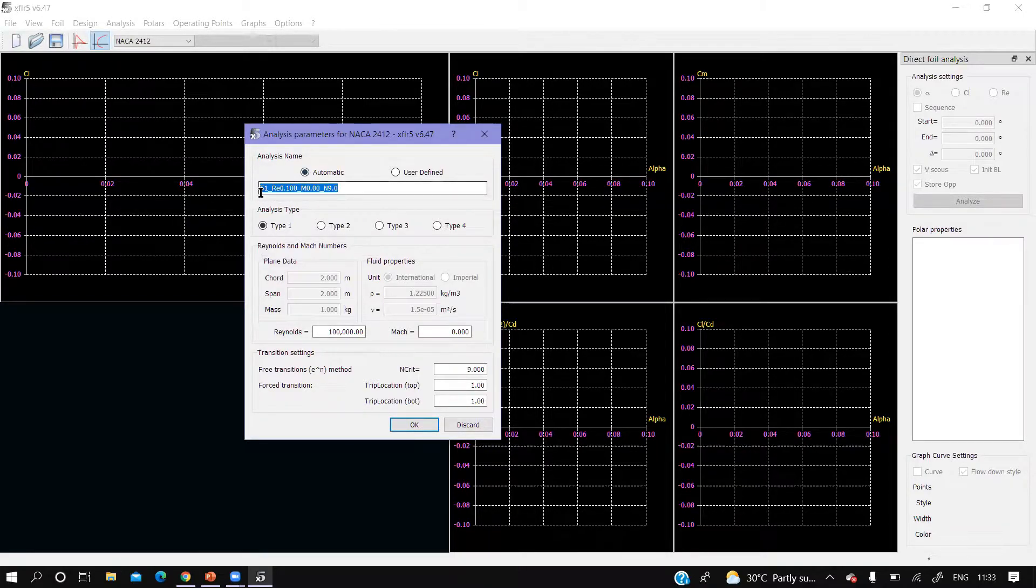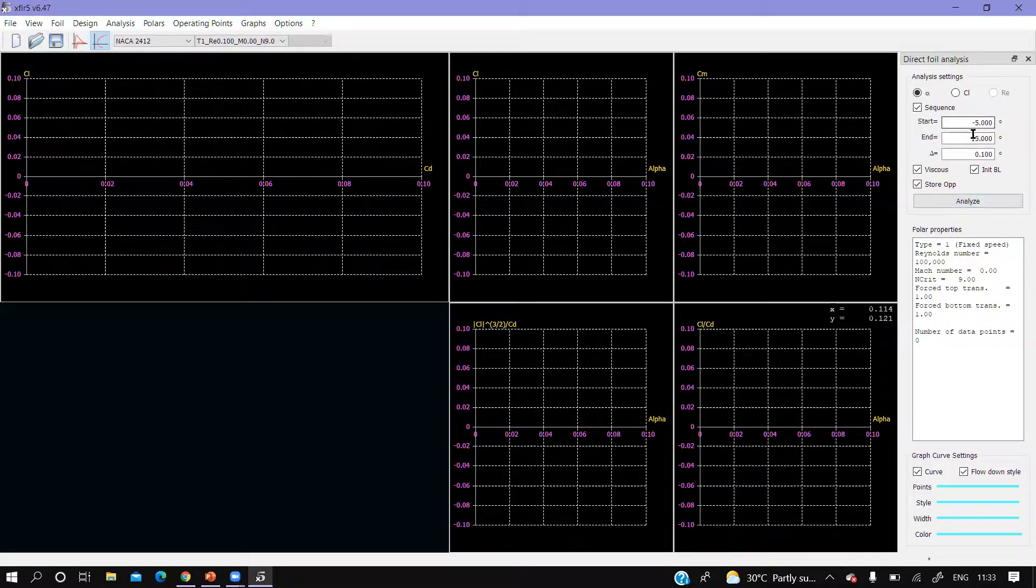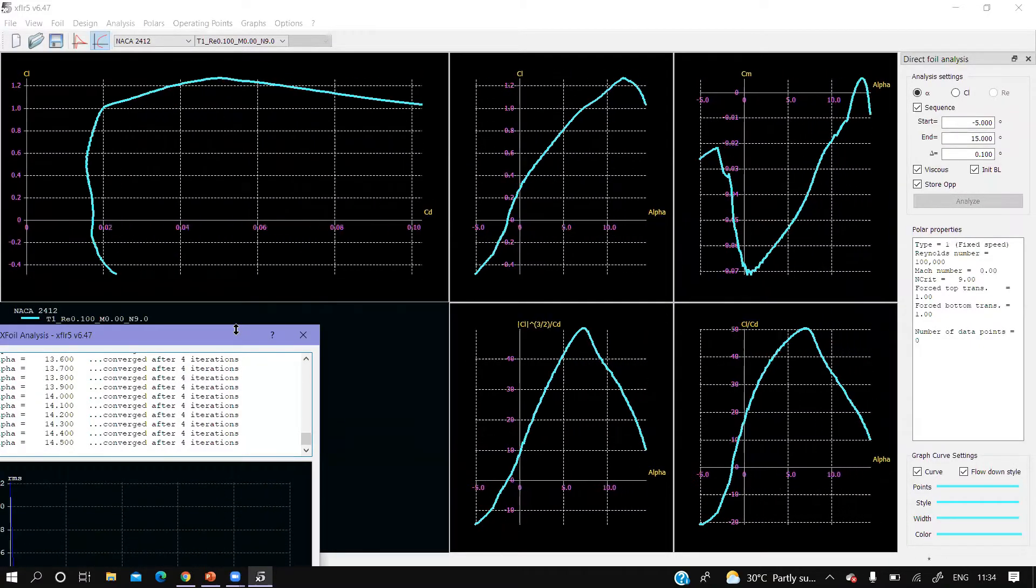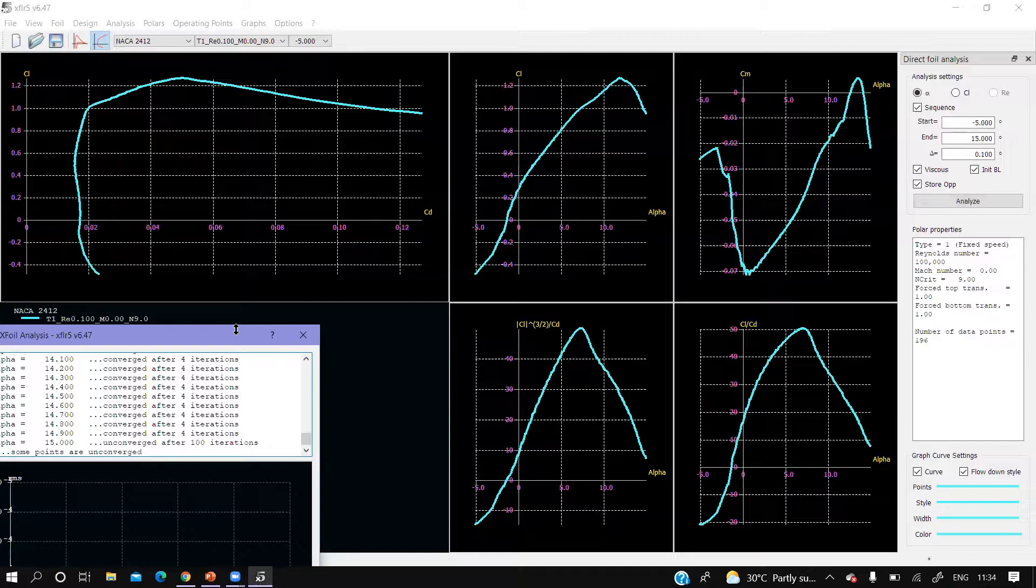Critical value, yes. Let's analyze between minus 5 to 15 degrees with an increment of 0.1 degrees. Taking viscous, initial boundary, including that, load and analyze. This is the drag polar curve which is shown here - CL versus CD. In this tutorial we are discussing about this only.